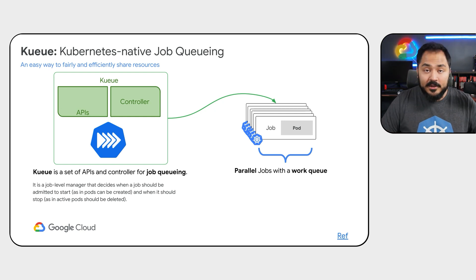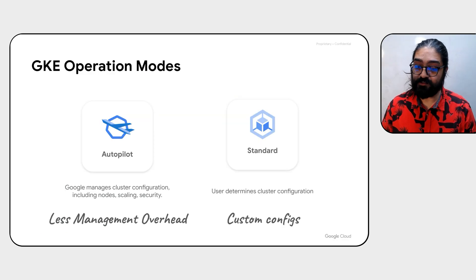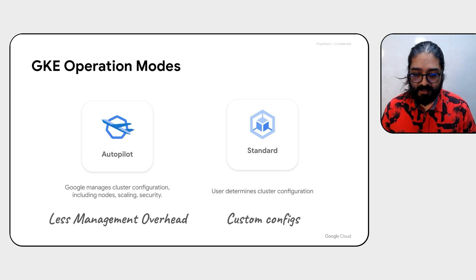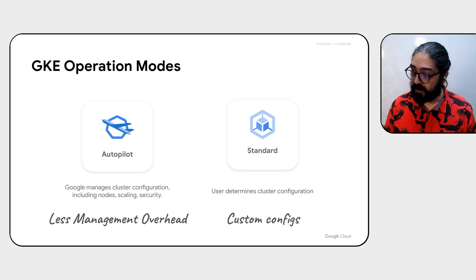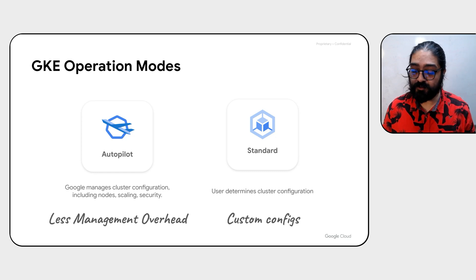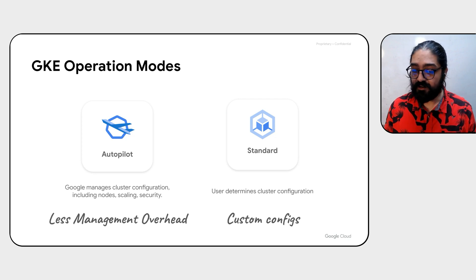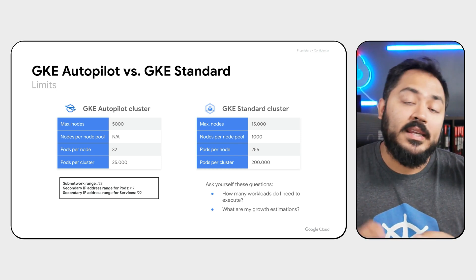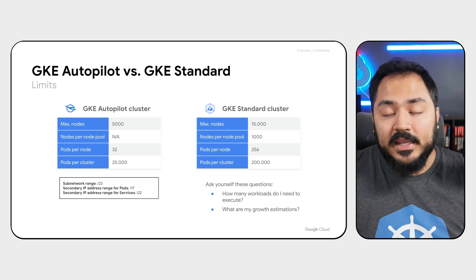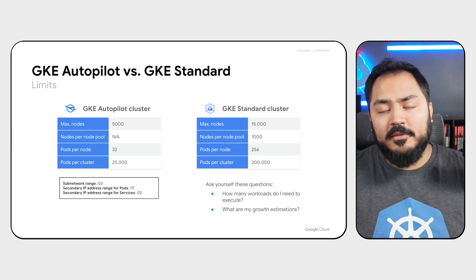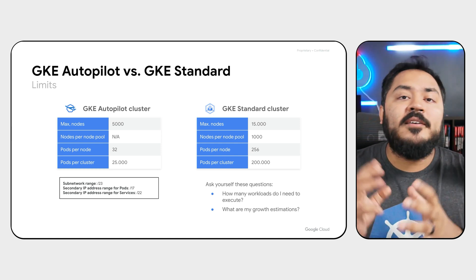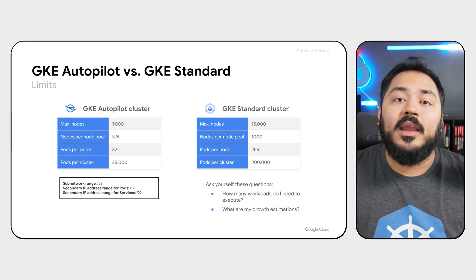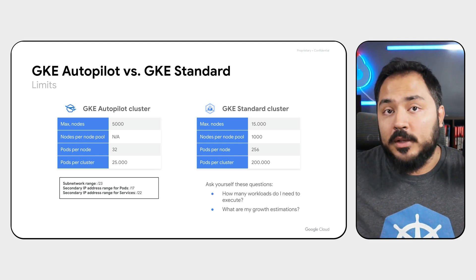We'll talk about Kueue in much more detail in a future video. GKE is Google Kubernetes Engine, which is a Google-managed Kubernetes experience. It comes in two modes of operation: Autopilot, which is completely hands-off where you focus on your workload and Google manages the infrastructure to fulfill what the workload needs; and Standard, where you have a lot more in-depth control over how resources are configured and deployed. Both GKE Autopilot and GKE Standard have access to all shapes of Google Cloud VMs, accelerators, and spot instances. The main difference ends up being how much responsibility you want to take and how much you want to focus on just your workload.